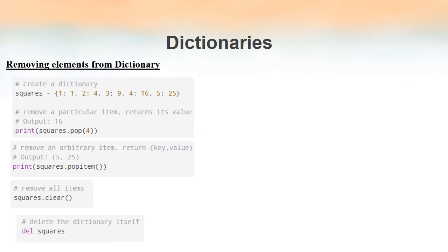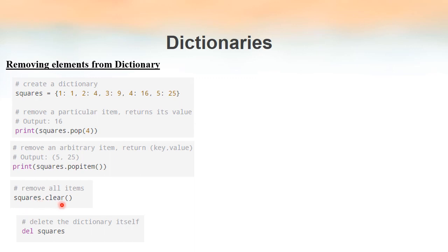Here we have a dictionary named squares with key-value pairs for keys 1 through 5. Using pop() we specify the key to remove; the corresponding value is returned — for example, squares.pop(4) returns 16 and removes that pair. Using popitem() arbitrarily removes a key-value pair without specifying which. The clear() method removes all elements from the dictionary, and del can be used to delete the entire dictionary.